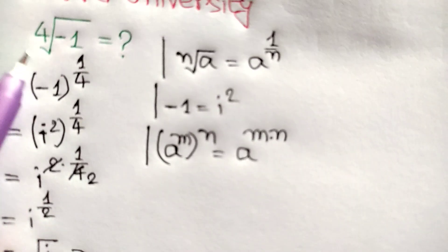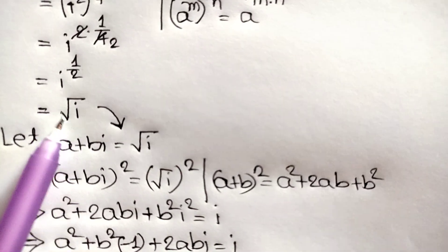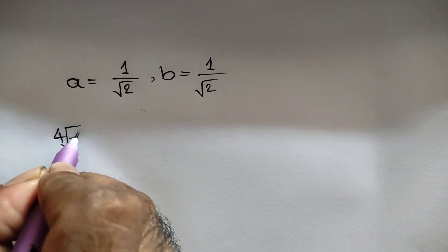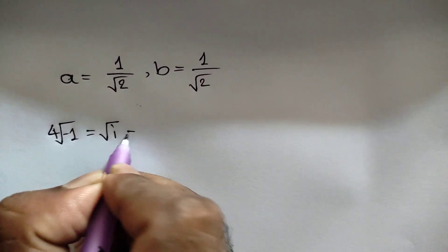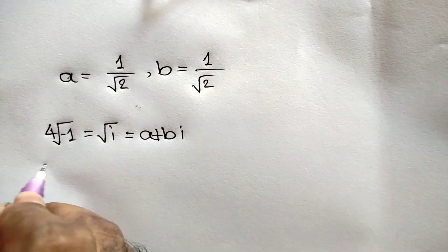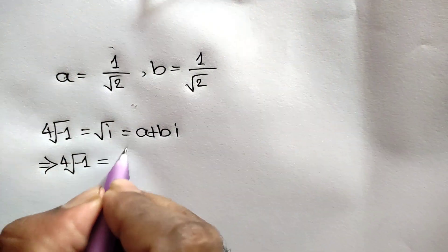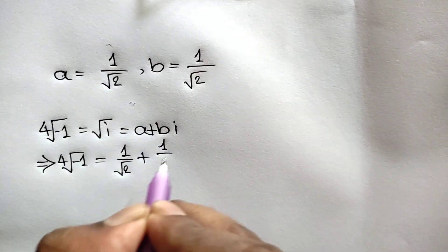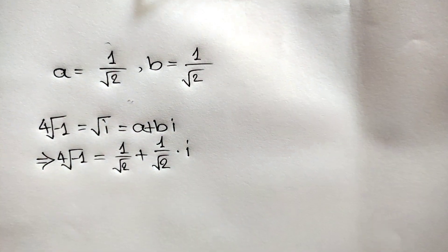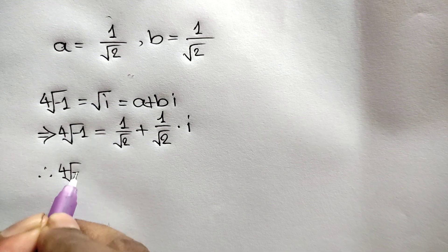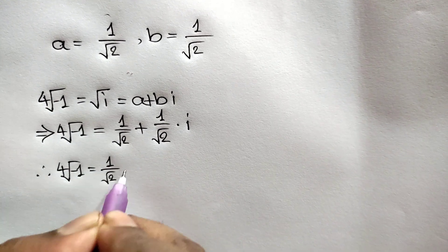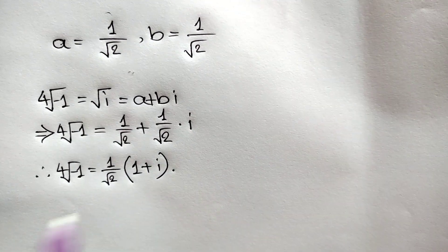Recalling that the fourth square root of negative one equals the square root of i, and square root of i equals a plus bi, we can write: the fourth square root of negative one equals a plus bi equals one over square root of two plus one over square root of two times i. Factoring out one over square root of two, the final answer is the fourth root of negative one equals one over square root of two times one plus i.